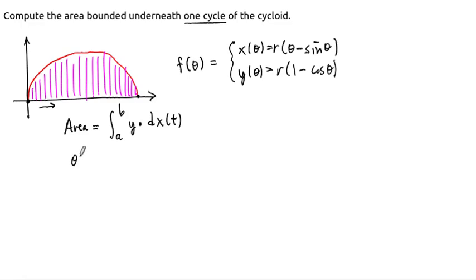if you remember the derivation of the cycloid. So one complete rotation of the wheel says that theta, this should be a theta here, not a t. But theta goes from 0 to 2 pi.